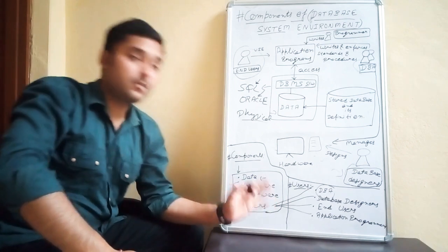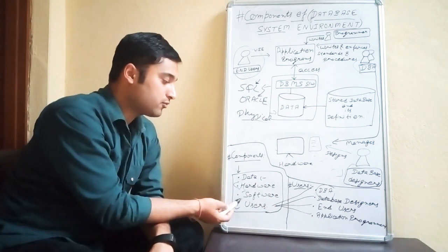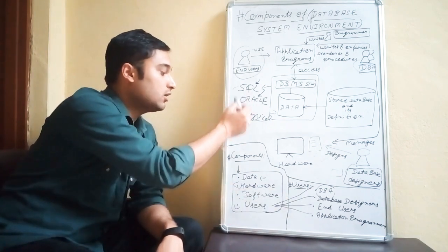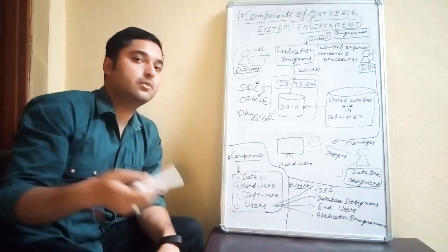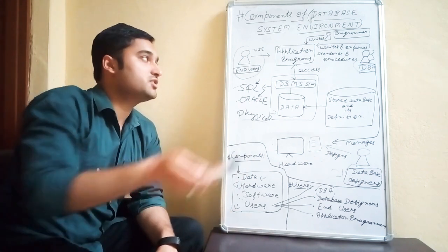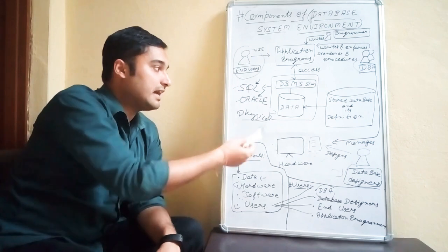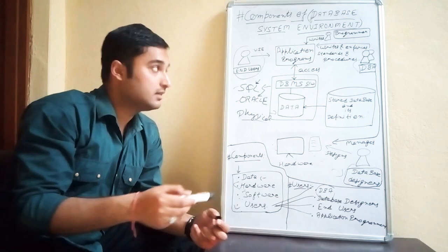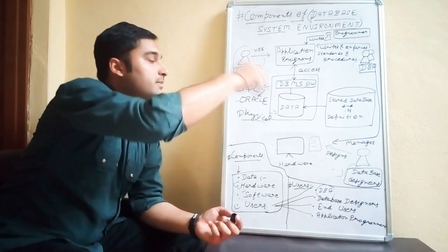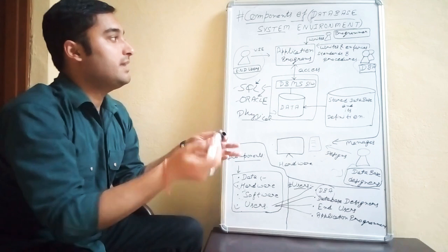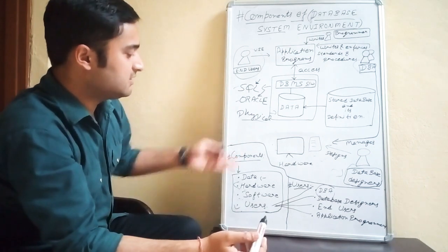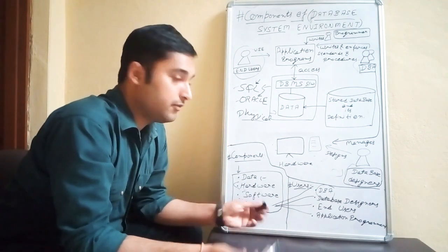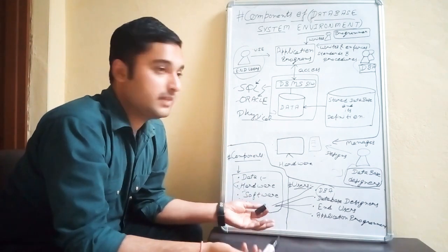So the four components are: data, hardware, software, and users. We have four kinds of users; software like SQL and Oracle; hardware like the monitor, keyboard, printer, and wires; and data which can be numerical, alphabetical, logical, or any kind. These four components make up the whole database system environment.